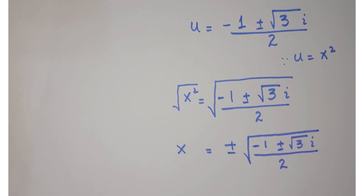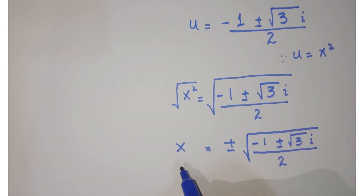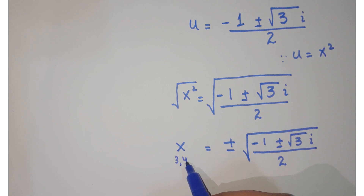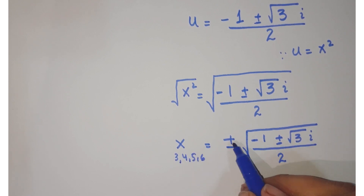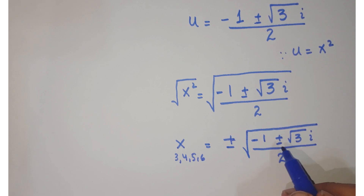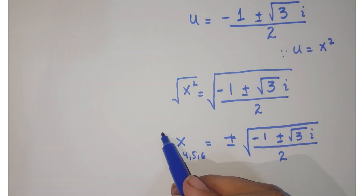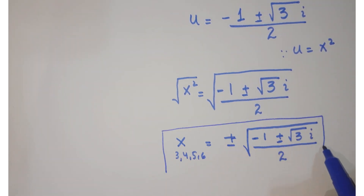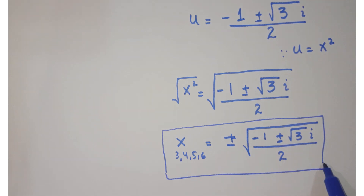These are the third, fourth, fifth, and sixth solutions — four possible values from this part. So we have calculated six solutions in total from Case 1, out of the 12 solutions of x.